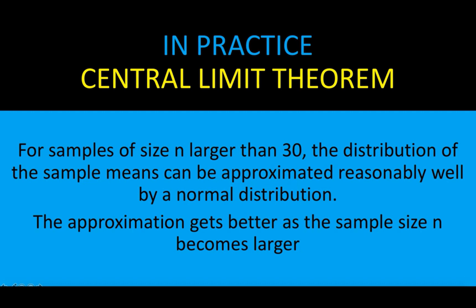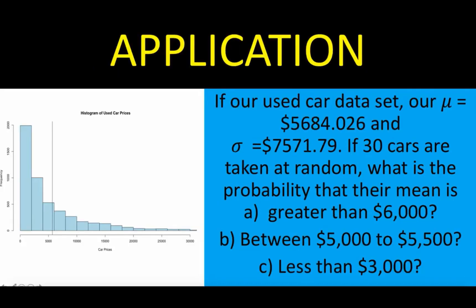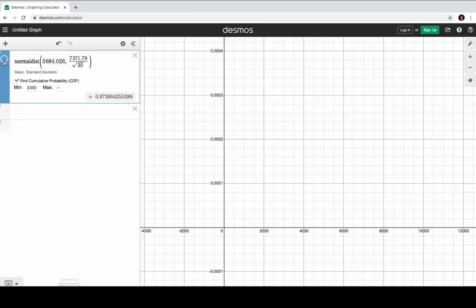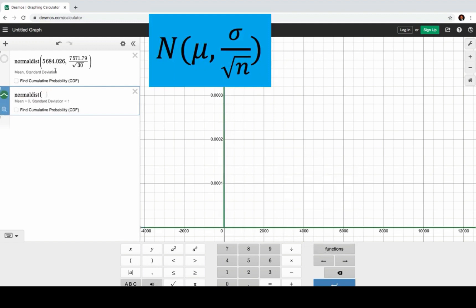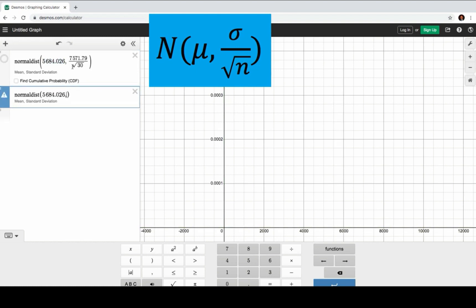Let's look at some applications. Going back to our used car dataset: the population mean is 5,684 (the average price of the used cars), and the standard deviation of the population is 7,571. If 30 cars are taken randomly, what is the probability that their mean is: (A) greater than $6,000, (B) between $5,000 and $5,500, and (C) less than $3,000? Let's go to the Desmos graphing calculator. We go to function, then normal distribution, and put in two parameters. The mean of the population is 5,684.26, and the standard deviation is sigma over the square root of n.